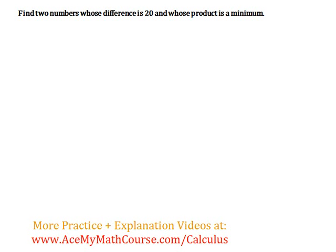Now let's work on optimization problems. This first one is somewhat simple. Find two numbers whose difference is 20 and whose product is a minimum.